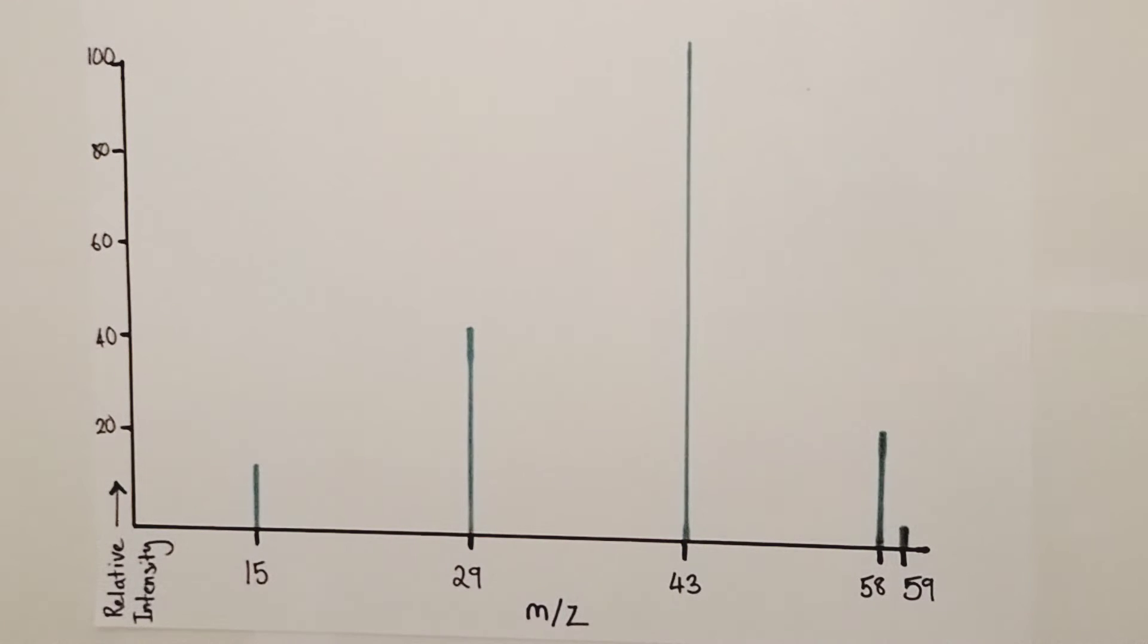That will always be the peak at the highest mass charge ratio that is still a prominent peak, still has a good height to it. So looking at this mass spectrum here, it appears to be 58 would be my molecular ion peak, because 58 is at the highest mass charge ratio, has the highest relative mass of the various pieces of molecule, but it's still a prominent peak with a good height. 59 is not the molecular ion peak, it's something else we'll talk about later, because it's very, very small compared to all the other peaks, and therefore it cannot be representing the molecular ion, because the molecular ion should have quite a high proportion in terms of what is present in the mass spectrometry readout, because quite a lot of the molecules hitting the detector will be the unfragmented whole molecule itself.